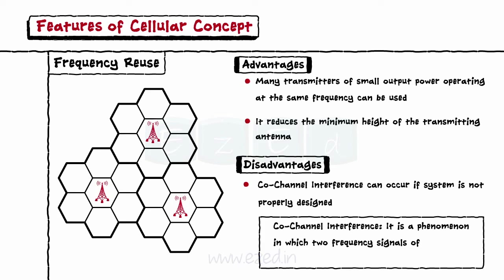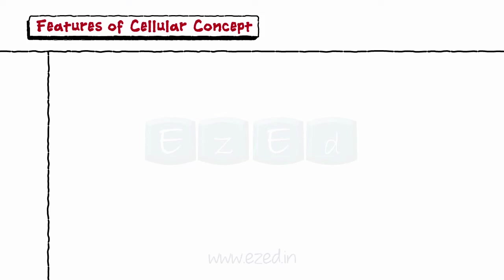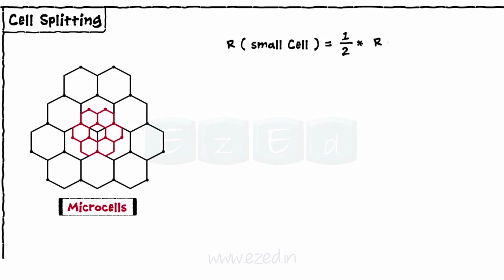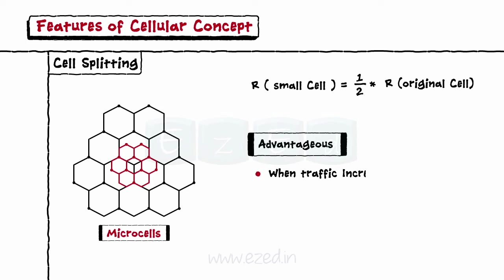The second feature of the cellular concept is cell splitting. In cell splitting, each cell is divided into smaller cells known as micro-cells. The radius of these small cells is half of the original radius. Cell splitting proves advantageous when the traffic of cell phone users increases beyond the limit of a regular cell.